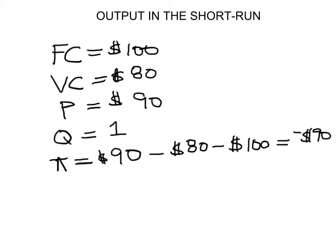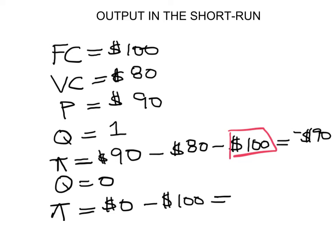But the problem is that you really cannot get rid of this $100. You have to pay them anyways. In fact, if you produce zero, if your output is actually zero, then how much will be your profits? Well in that case, you have no revenue because you cannot produce the one unit without at least having some variable costs. So this will be zero as to your revenue. You will not have to pay for the $80, but you still have to pay for the $100 in fixed costs. So you will actually be in the hole for $100.